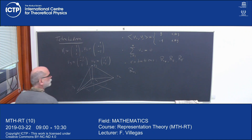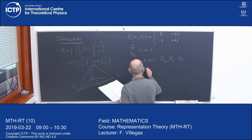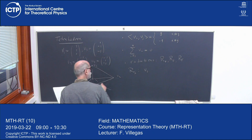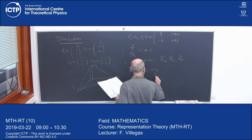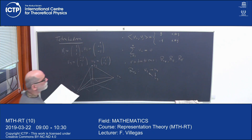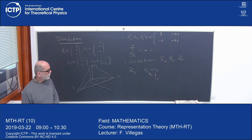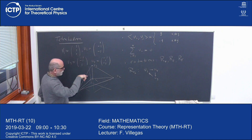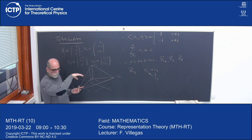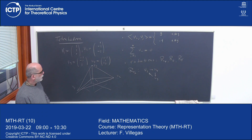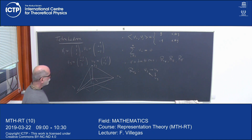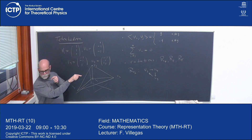For example, R of V1 fixes V1 and takes V2 to V4, V4 to V3, and V3 to V2. It would be better to have an actual model, which I don't have. You should imagine that the vector V1 goes through the origin and that's the axis of rotation, rotating the three vertices around like this. This axis will hit the middle of the face on the other side.